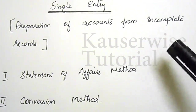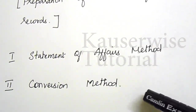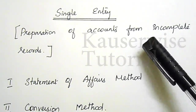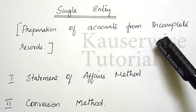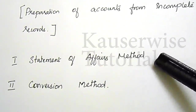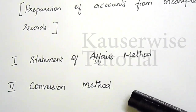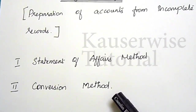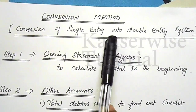In single entry, there are two methods: the first one is the statement of affairs method and the second one is the conversion method. Single entry is also known as preparation of accounts from incomplete information or incomplete records. In this video, we are going to see the conversion method, which means converting the incomplete information into complete information — that is, converting single entry into double entry system.